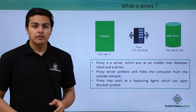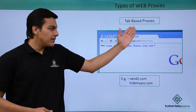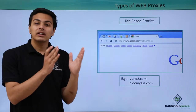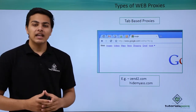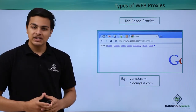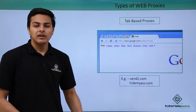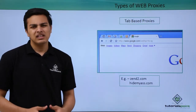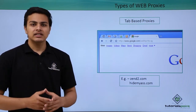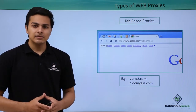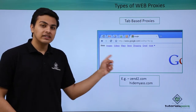Let's see how many types of proxies we can use. First, tab-based proxies — these will only work in a particular tab. There are some websites which provide tab-based proxy functionality, such as zentu.com and hidemys.com. The key thing to note is that in tab-based proxies, only a single tab gets affected by that proxy.